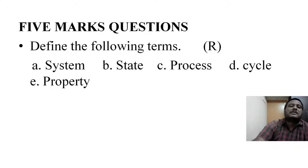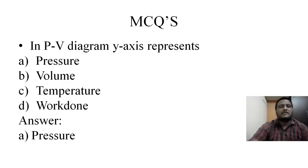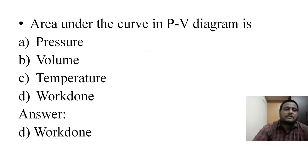In the last session, we had multiple choice questions. In PV Diagram, which axis represents what? Pressure, Volume, Temperature, or Work done? The answer is pressure. Area under the curve in PV Diagram is called: Pressure, Volume, Temperature, or Work done? The answer is Work done.